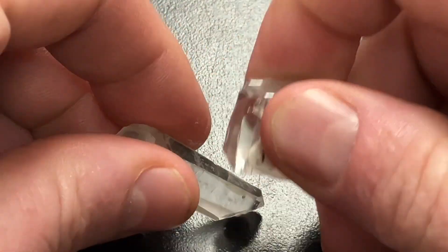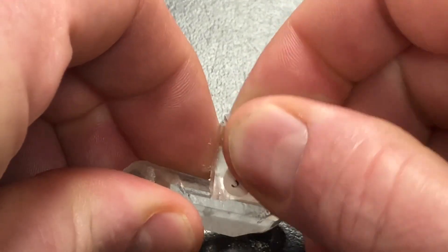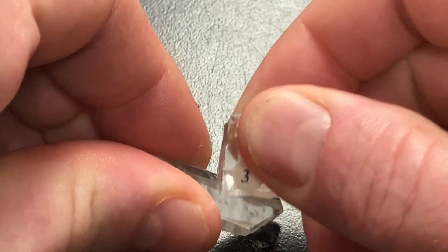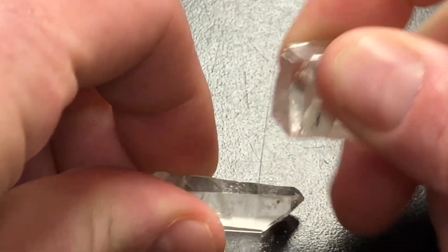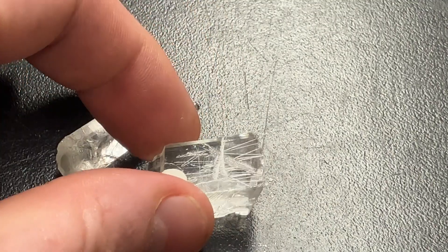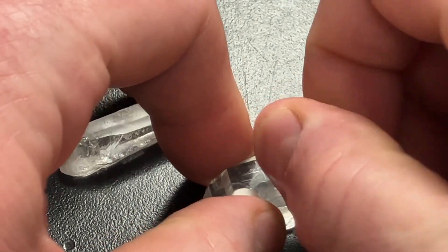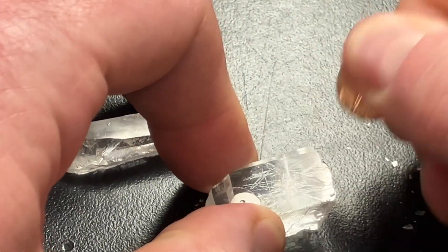But you cannot scratch the quartz with the calcite. The calcite is just too soft to make a mark on the quartz. In fact, the calcite's so soft, not so soft that I can scratch it with my fingernail, but I can scratch it with a penny.